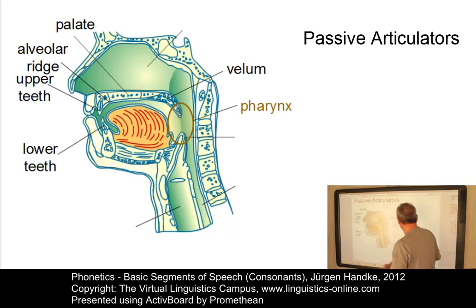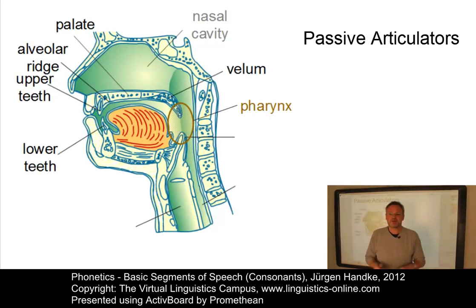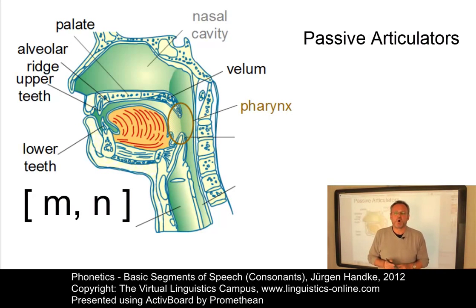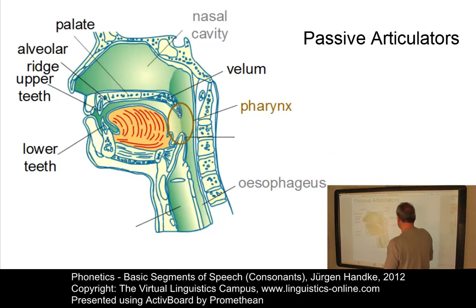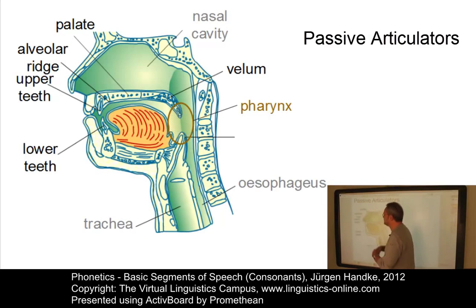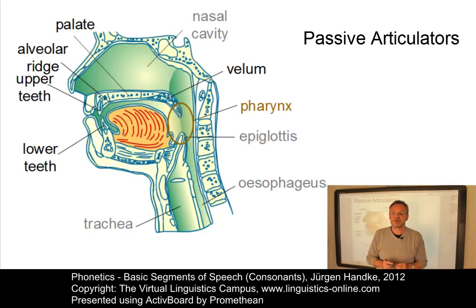Further areas include the nasal cavity, which is the main non-oral resonance chamber. Consonants that involve the nasal cavity are typically [m] or [n]. In the back of the mouth we find the food pipe or esophagus. The trachea or windpipe is used for breathing and for the airstream. Finally, we have the epiglottis, which is attached to the anterior part of the thyroid cartilage and functions as a closure to the entrance to the larynx during swallowing.